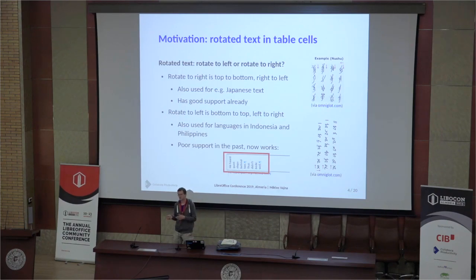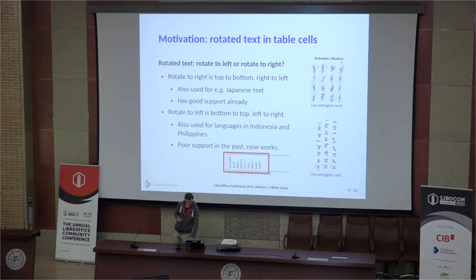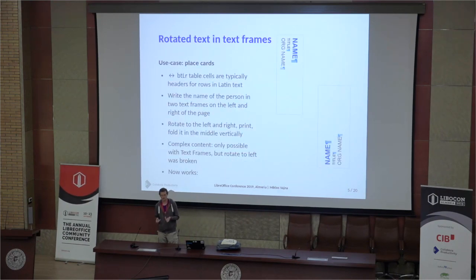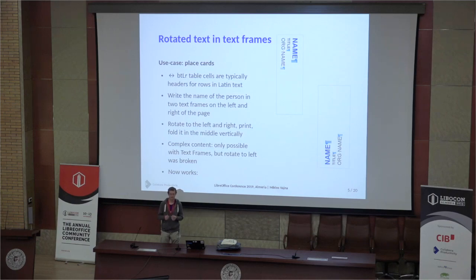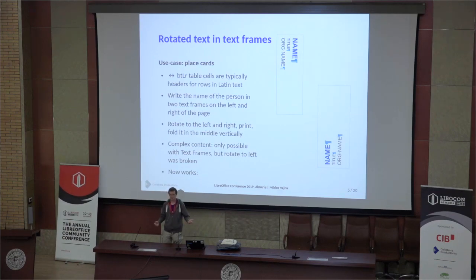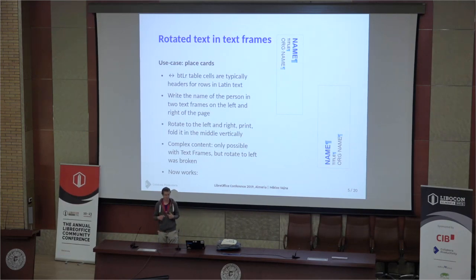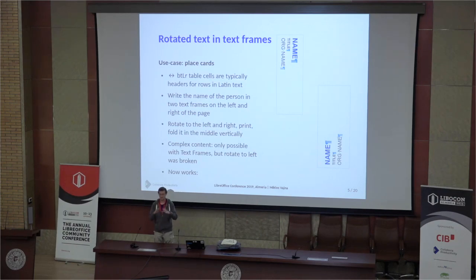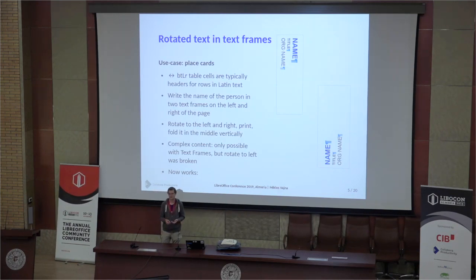Word supports this direction, so it makes sense to improve Writer to be on par with Word. Similarly, not only for table cells but also for Writer text frames, it's possible to have rotate-to-the-right or rotate-to-the-left direction. A real-world use case is meeting name cards, where the name is printed on both sides so both the person and attendees can read it — requiring one document with two shapes, same content, one rotated right and one rotated left.